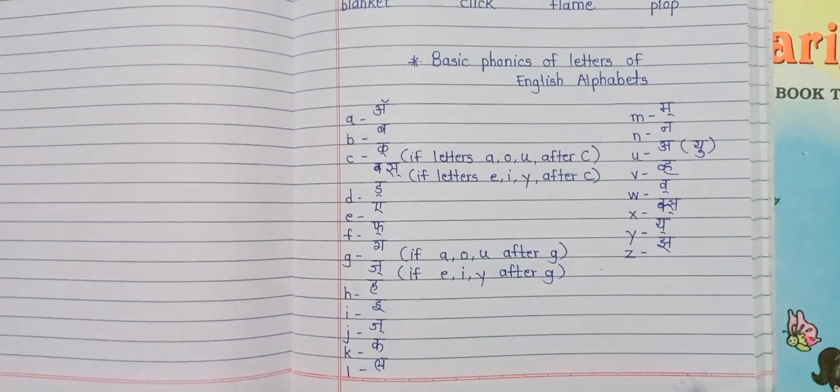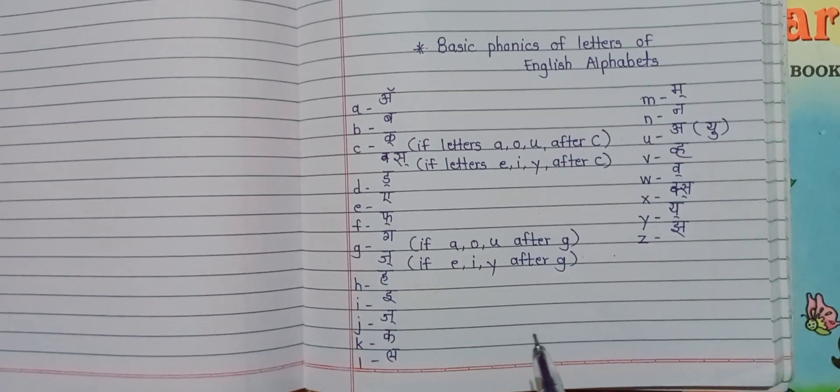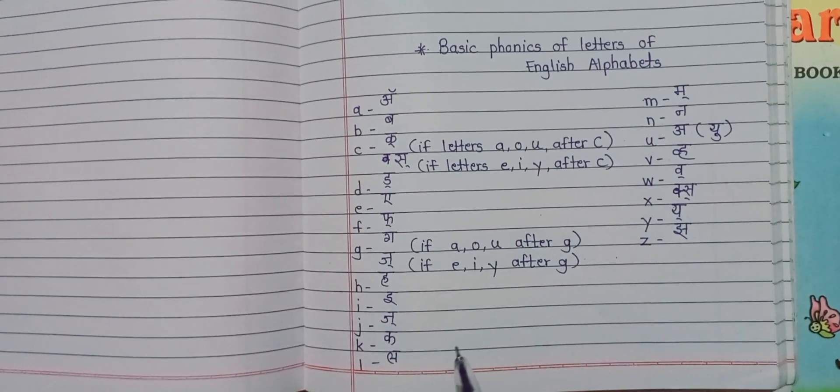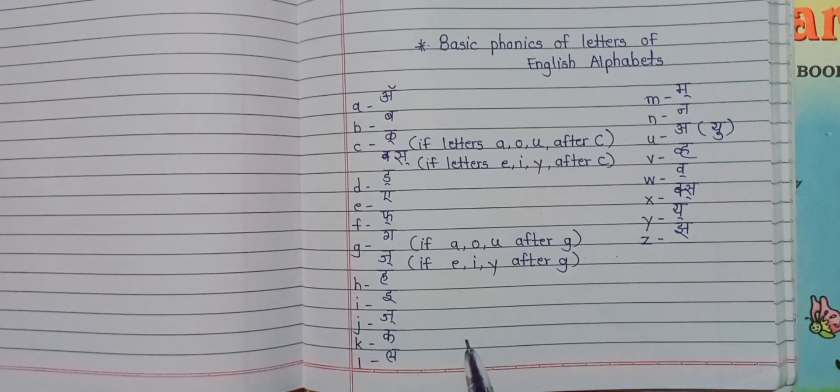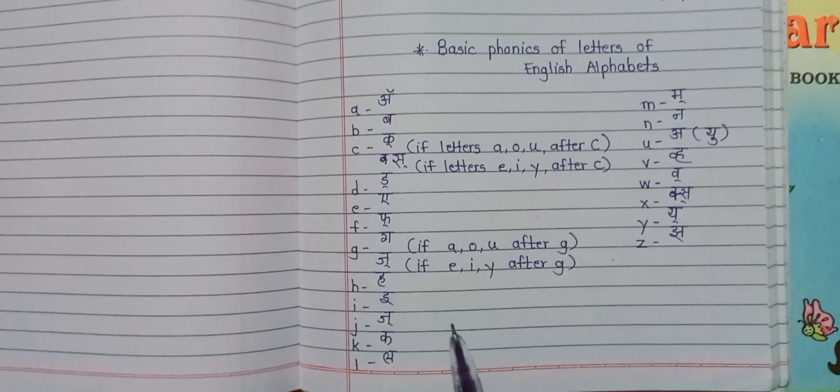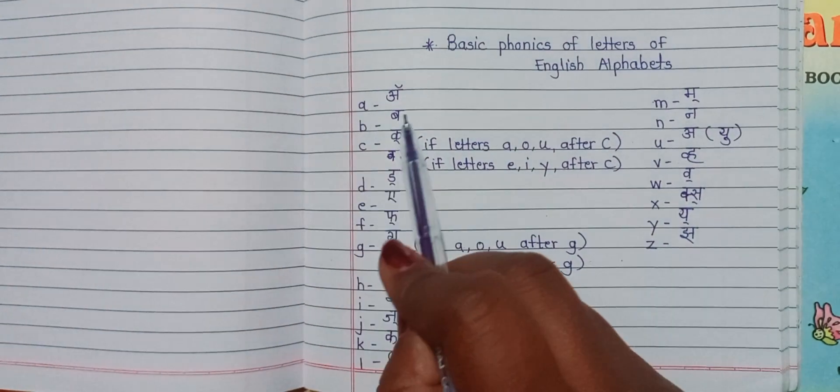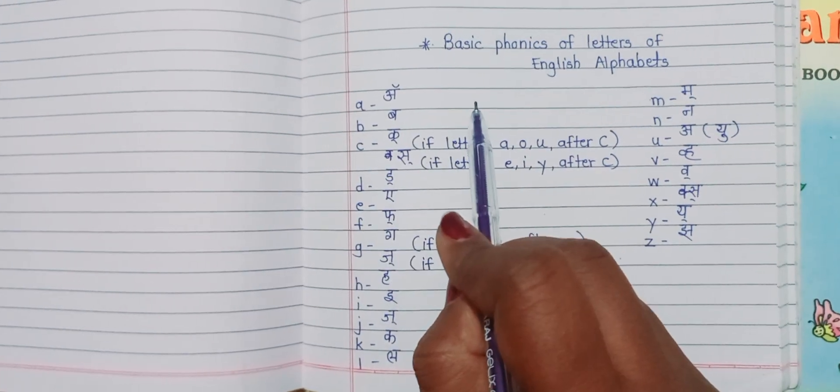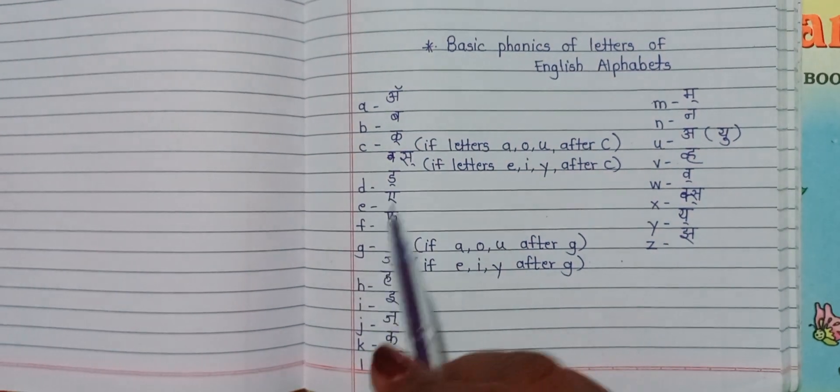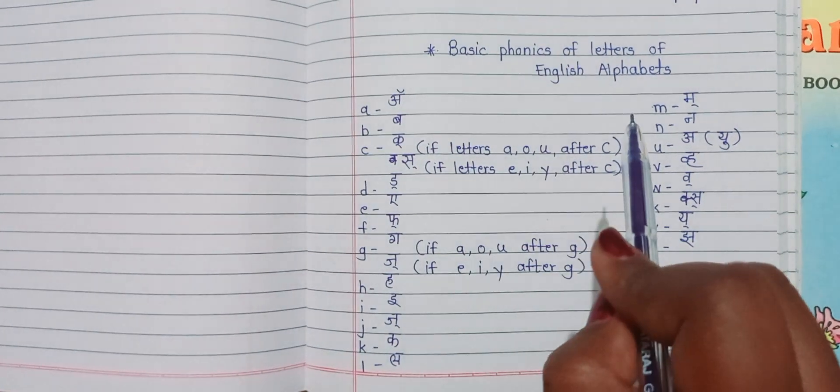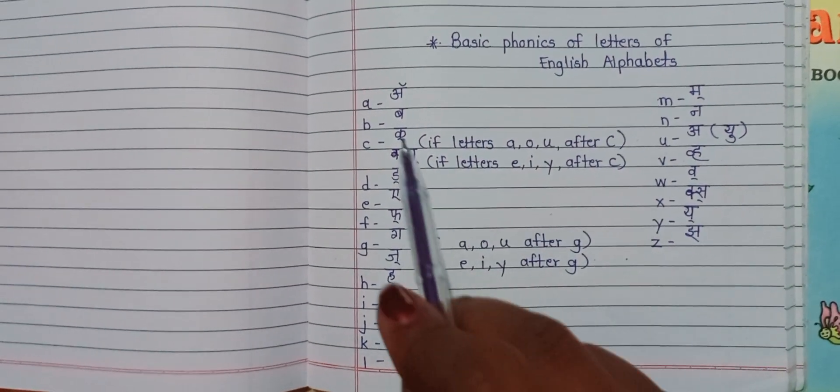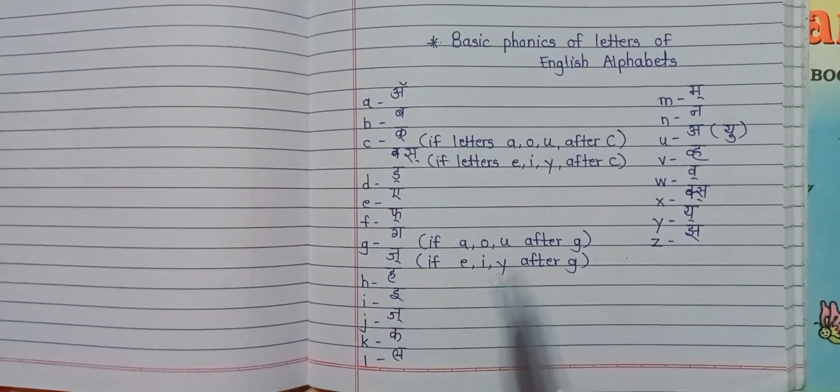These are the basic phonics or the basic sounds of the letters of English alphabets. Your work to do today, you have to find more 5 words for each of the letters and try to pronounce them in a particular way, how this is given here.